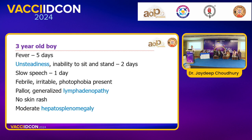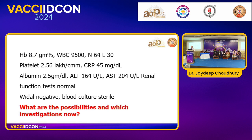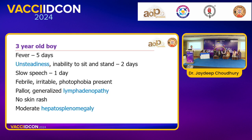The second case is a three-year-old boy with fever for five days, unsteadiness and inability to sit and stand for two days, and slow speech for one day. On examination: febrile, very irritable, photophobic, pale, generalized lymphadenopathy, no rash, moderate hepatosplenomegaly. CNS examination: tone, power, and reflexes normal, but bilateral horizontal nystagmus, truncal ataxia, and meningeal irritation. Investigations showed anemia, normal WBC, normal platelets, raised CRP at 45, raised liver enzymes, and normal renal functions.